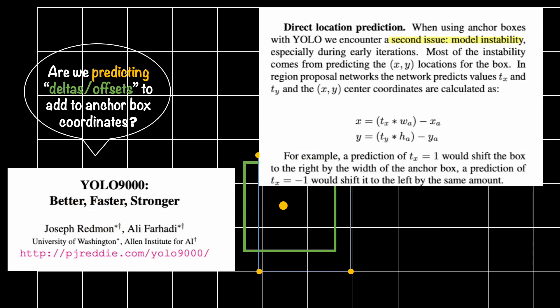But there are certain issues with this seemingly simple formulation of our objective. This is what was discussed in YOLO version 2 paper. The paper goes by the title YOLO 9000, but for all practical purposes, we call it YOLO V2.